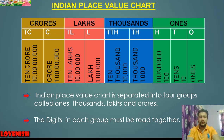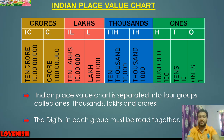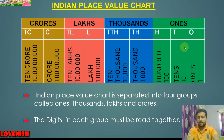There is a rule in both the Indian and international place value charts. While writing large numbers as per the place value system, separate the periods with commas. Using commas is very important — after each group we put a comma. According to the Indian system, the first comma comes after three digits because the ones group has three places: ones, tens, and hundreds.